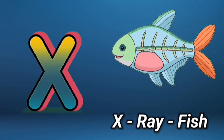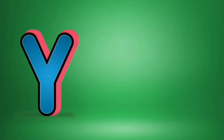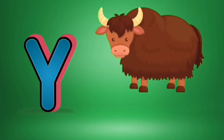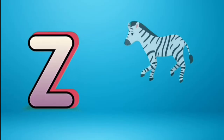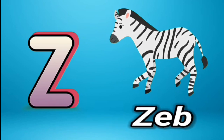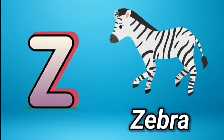X is for extra fish, x-x-x extra fish. Y is for yak, ya-ya-yak. Z is for zebra, z-z-z zebra.